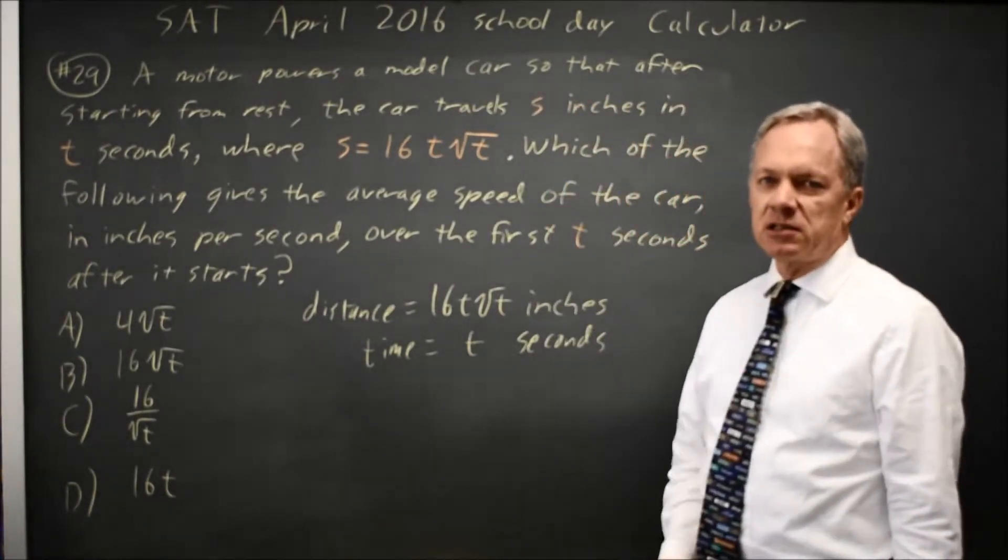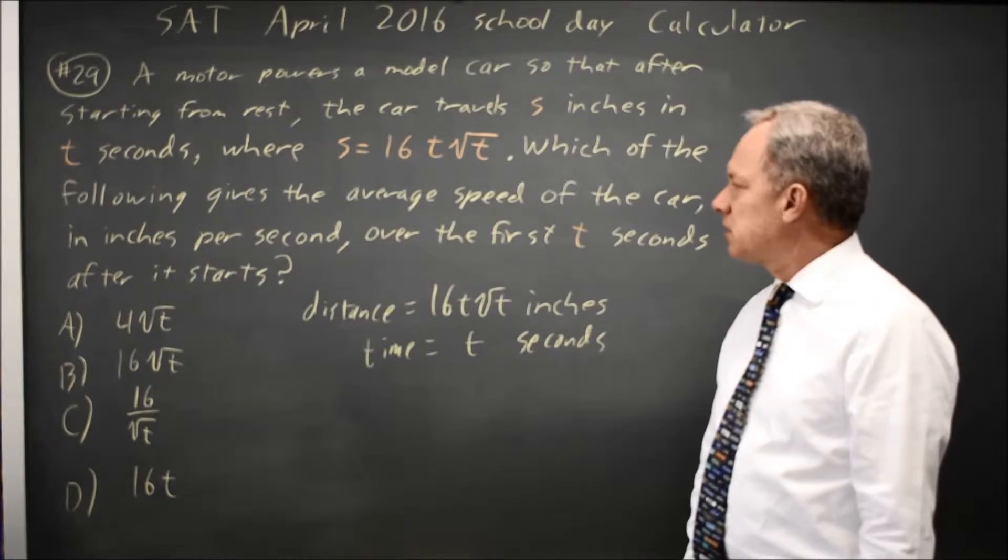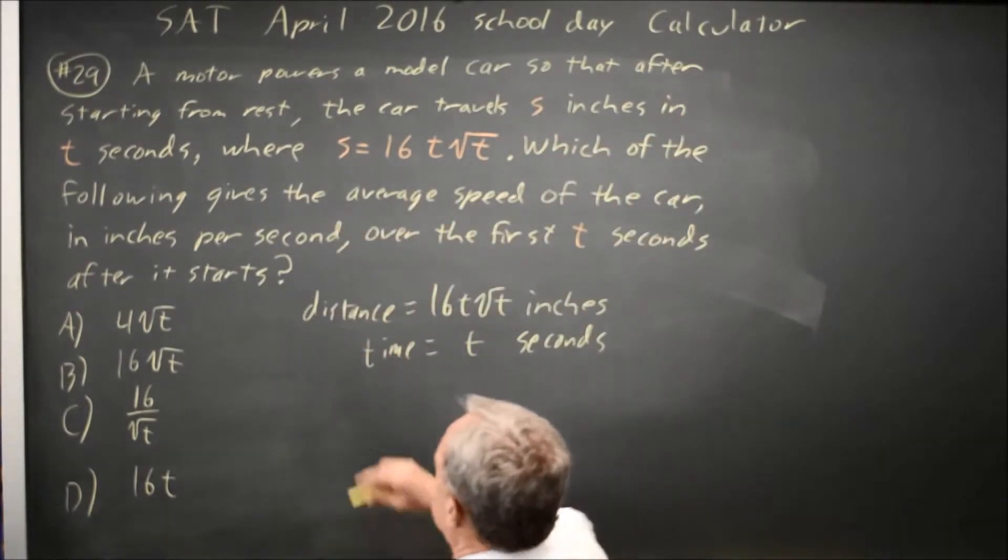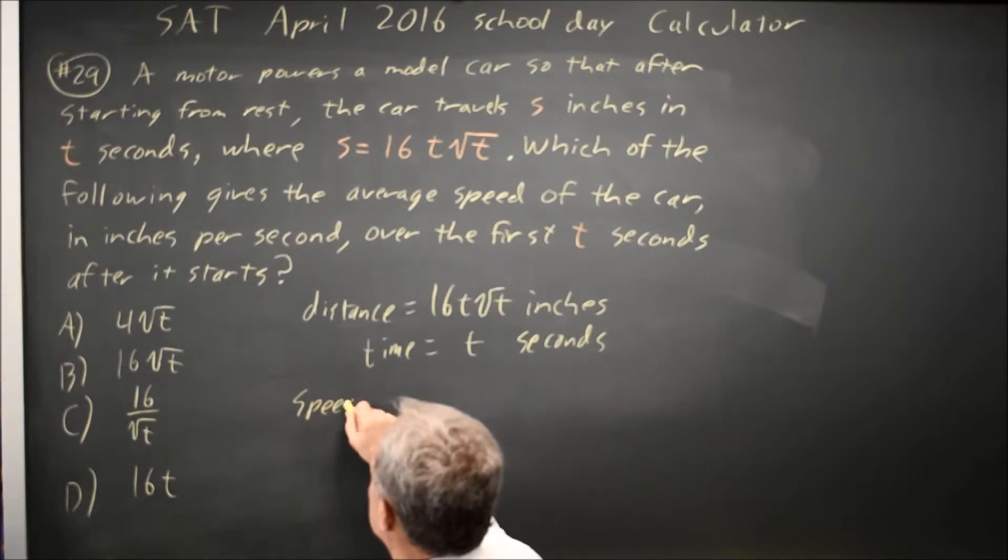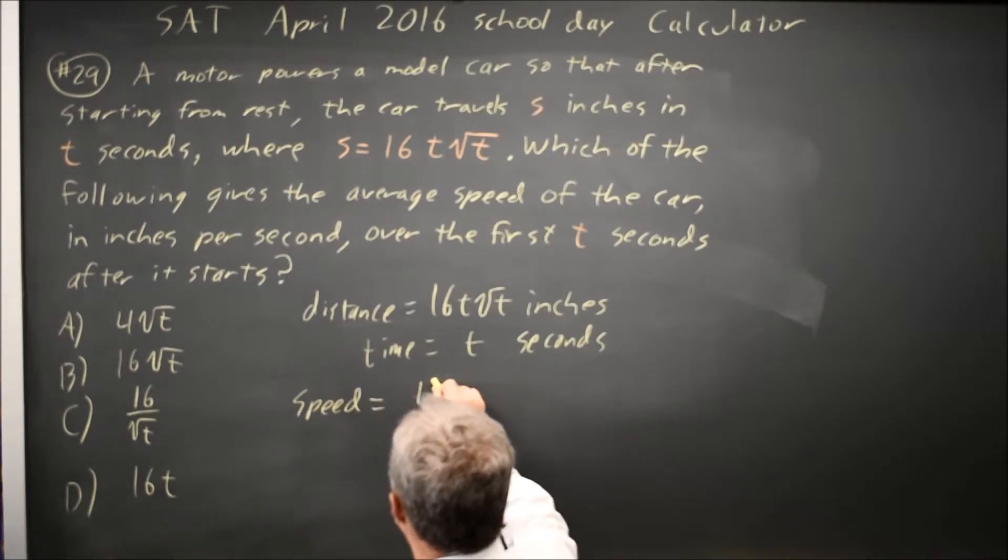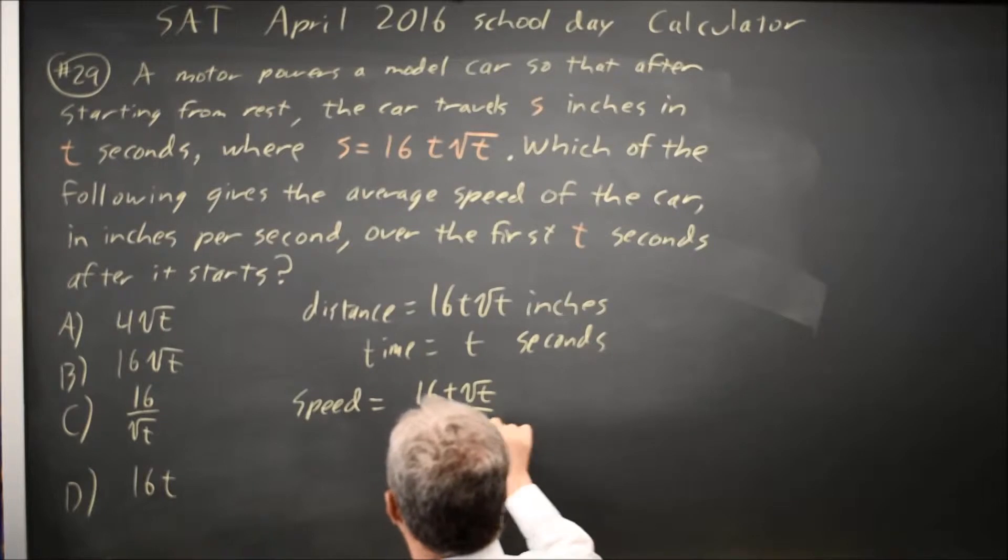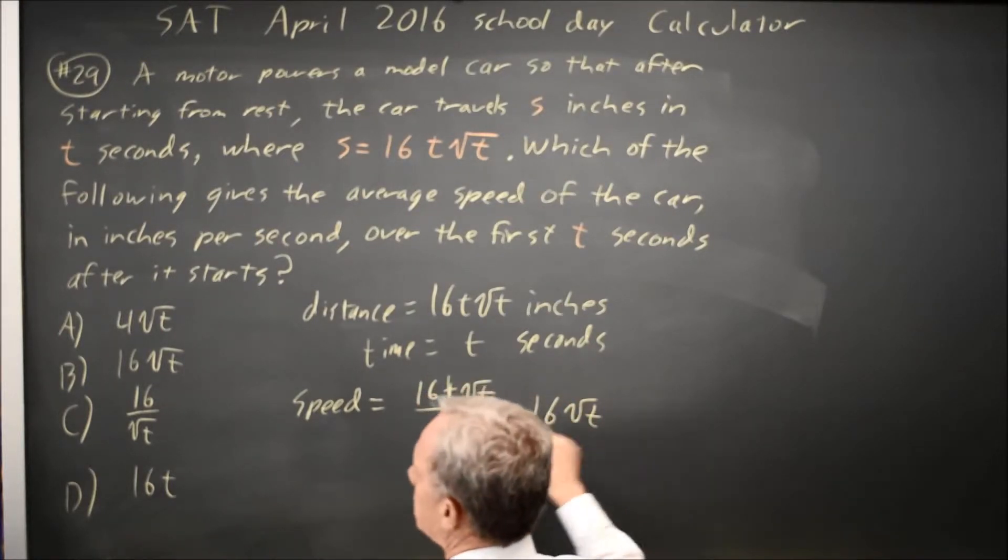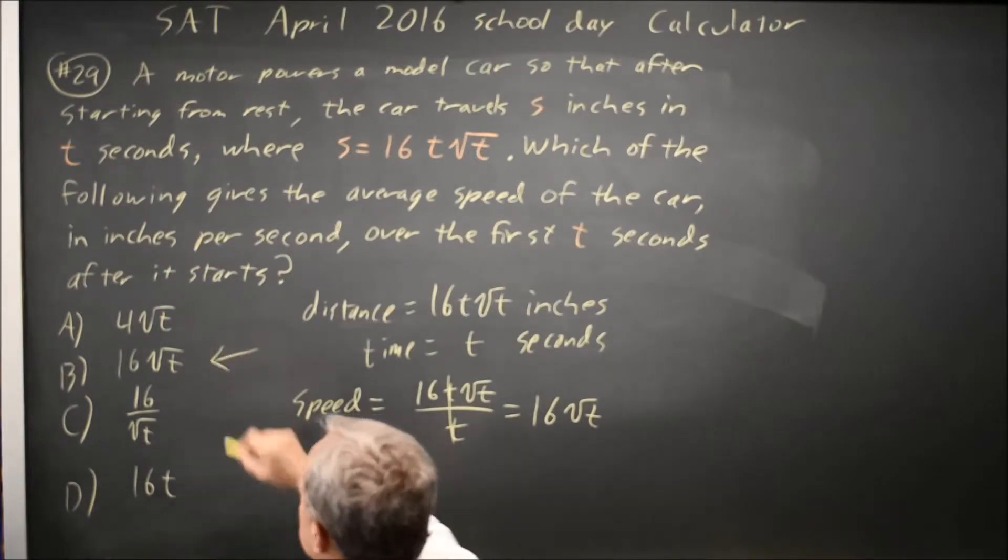Dimensional analysis, like we do in chemistry, will tell us that the speed in inches per second is your inches divided by your seconds. t over t is 1, so that's 16√t, which is choice B.